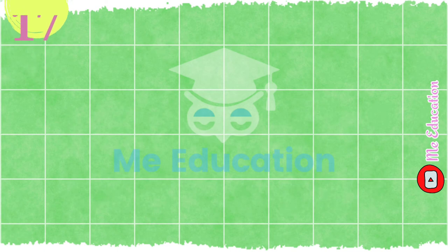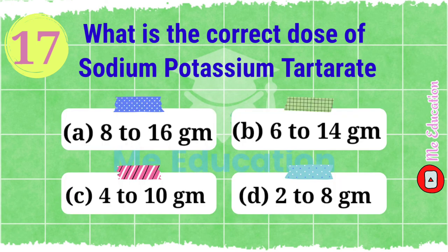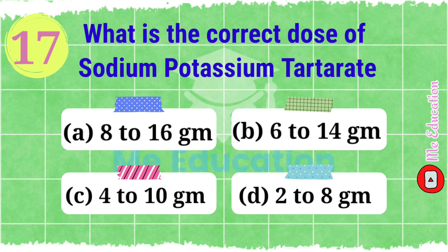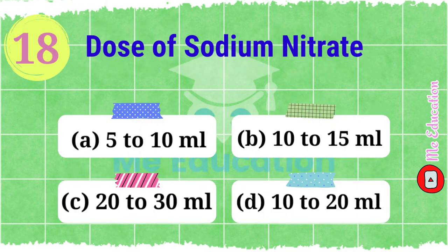Question number seventeen: what is the correct dose of sodium potassium tartarate? Options: A) 8 to 16 grams, B) 6 to 14 grams, C) 4 to 10 grams, D) 2 to 8 grams. The right answer is option A, 8 to 16 grams.